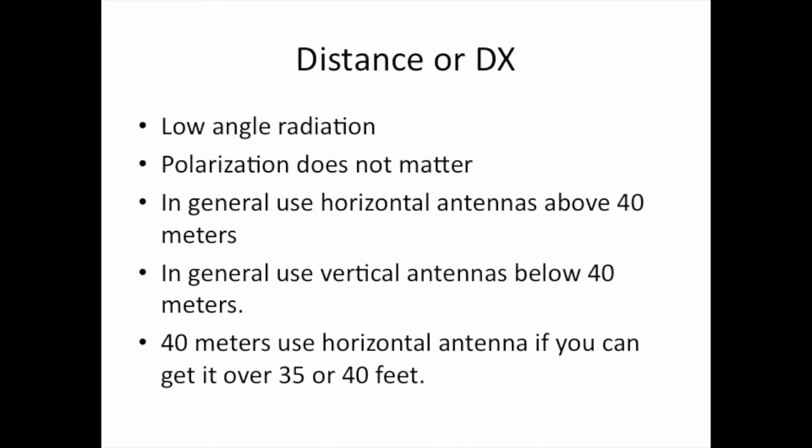For long-distance communications — DX — you want low-angle radiation. Again, polarization does not matter when bouncing your signal off the ionosphere. In general, you want to use a horizontal antenna above 40 meters. On 40 meters, use a horizontal antenna if you can get it over 35 or 40 feet. If you can't get a horizontal antenna that high, you're probably going to go to a vertical on 40 meters.